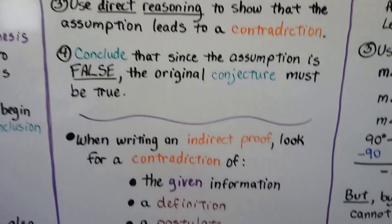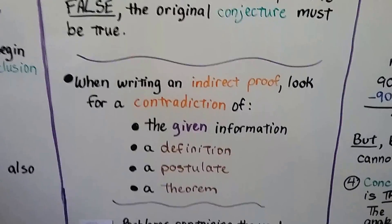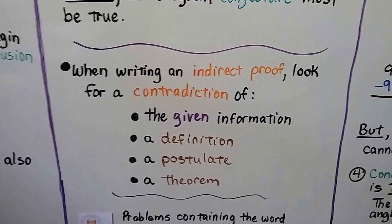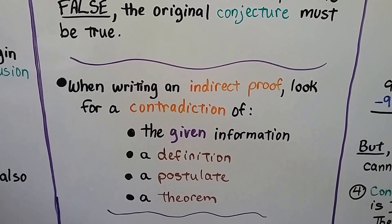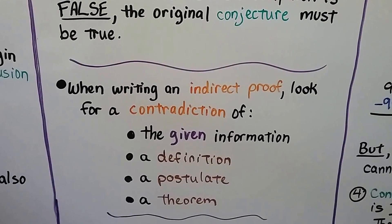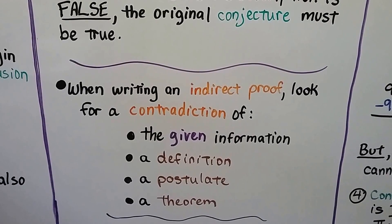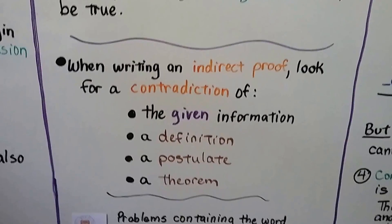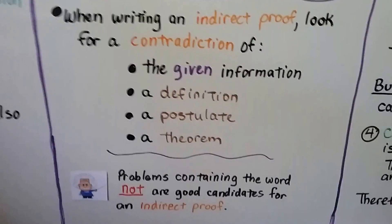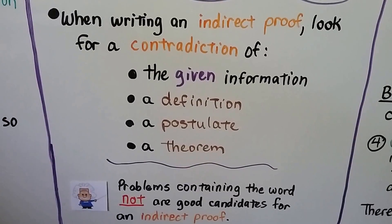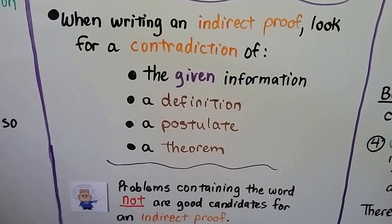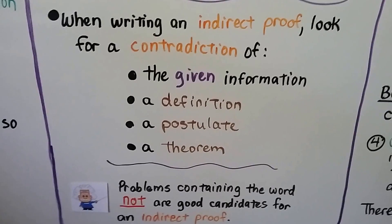When writing an indirect proof, look for a contradiction of the given information, a definition, a postulate, or a theorem. And problems containing the word 'not' are good candidates for an indirect proof.